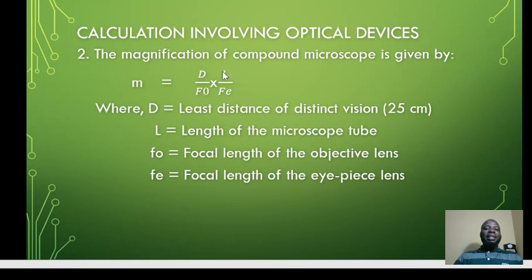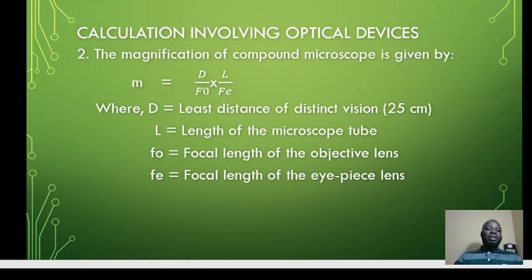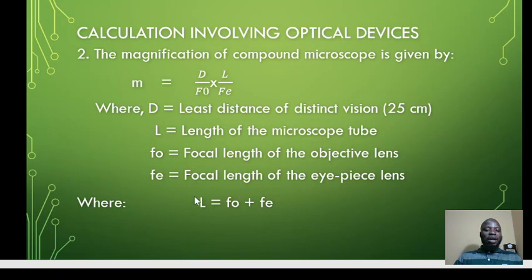L is the length of the compound microscope, also called the distance between the lenses of the microscope. F-naught is the focal length of the objective lens, and Fe is the focal length of the eyepiece. To calculate the length L of the microscope, the formula is simply L equals F-naught plus Fe.